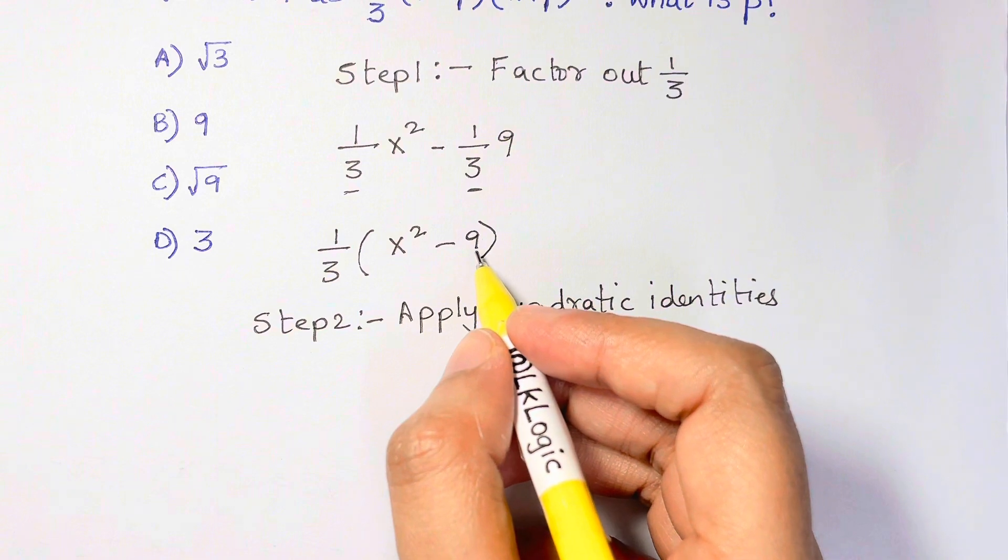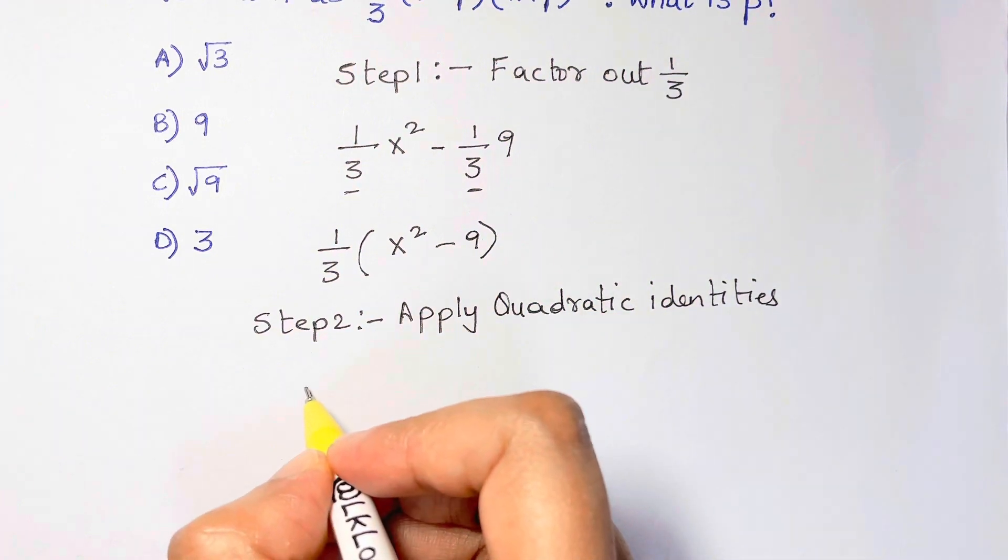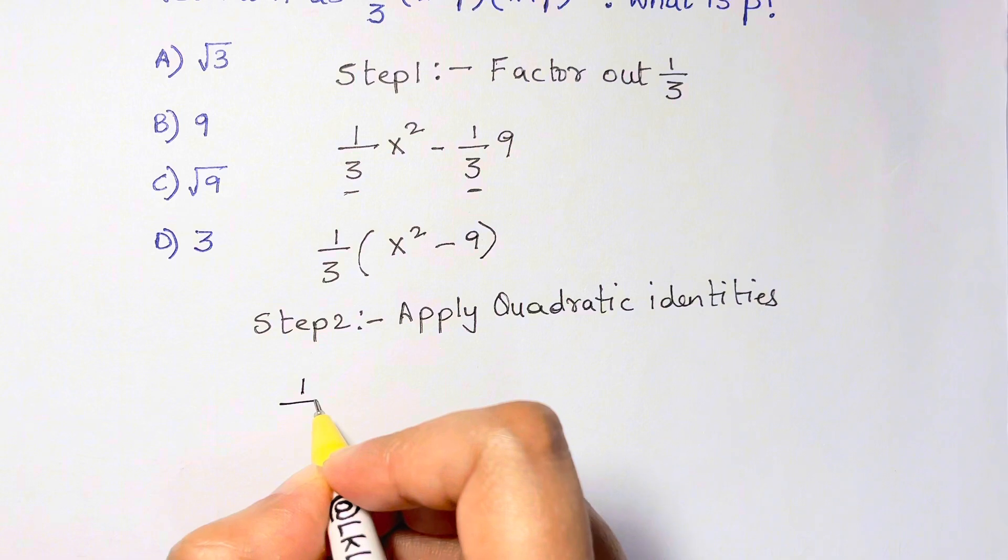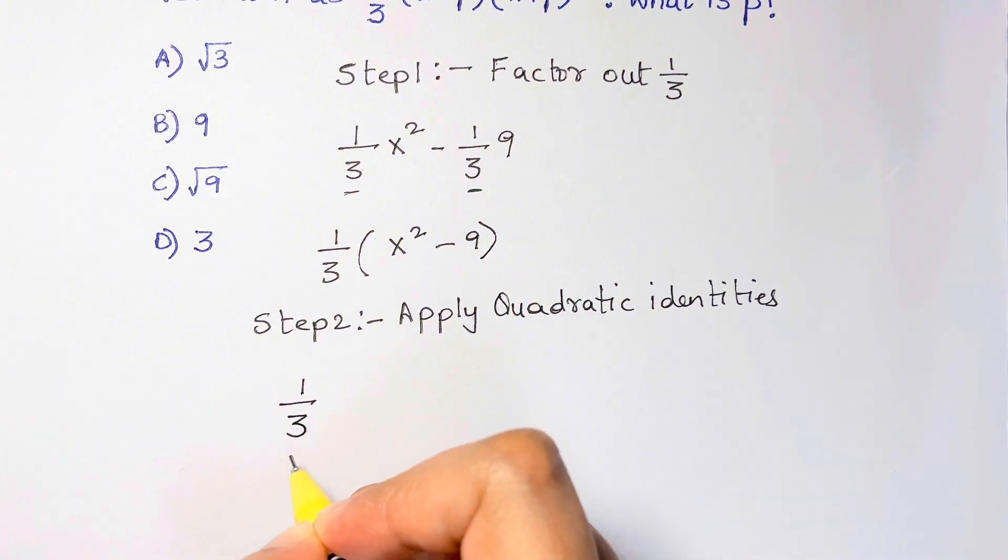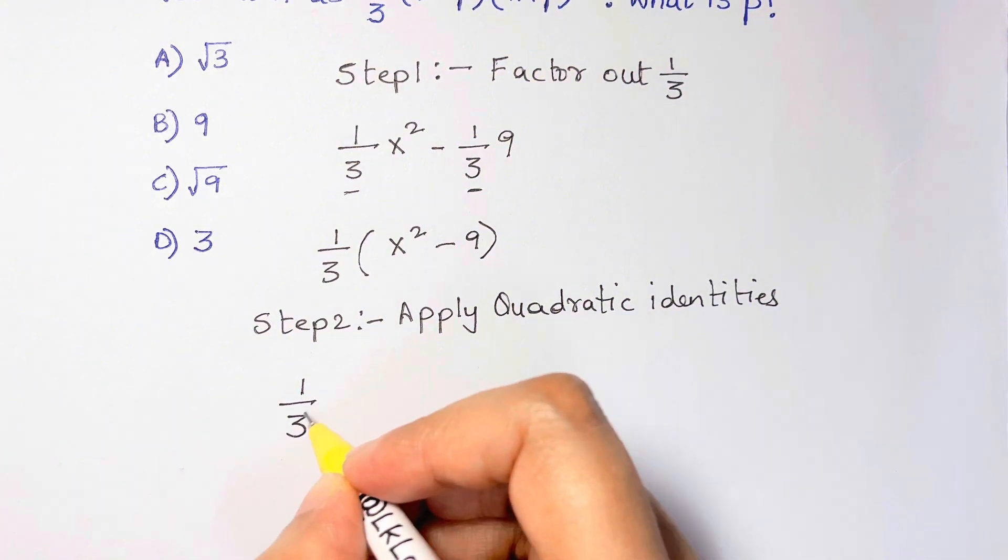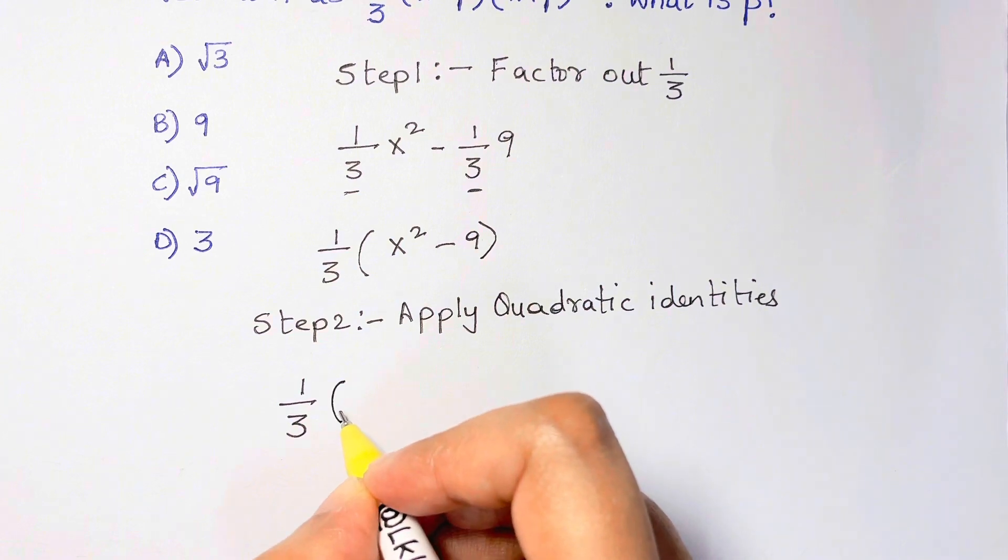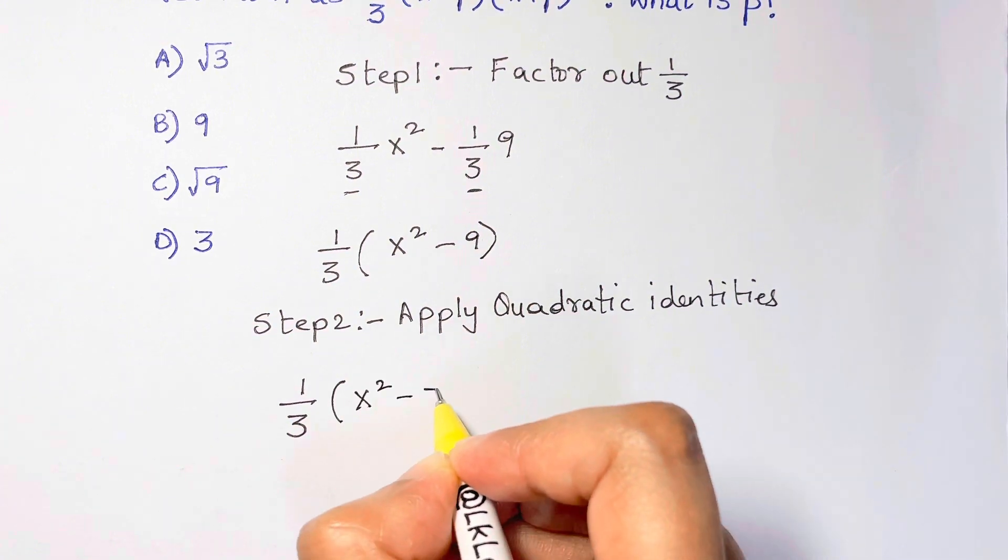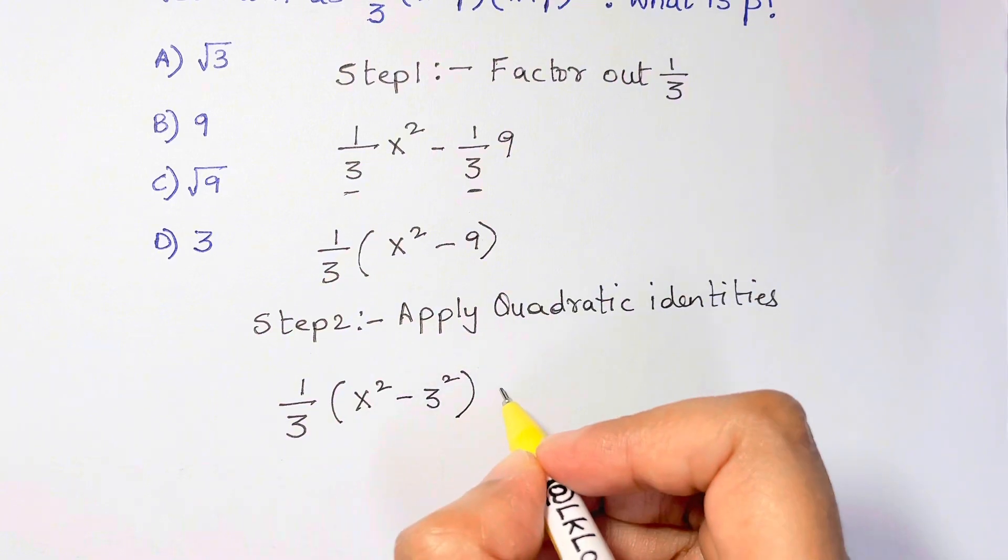You can think of it as 3². So we can easily represent the expression as 1/3, and inside the parentheses you have x² - 3².